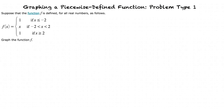We are being asked to graph a piecewise function defined as: f of x is equal to 1 if x is less than or equal to negative 2; f of x is equal to x if x is greater than negative 2 but less than 2; and f of x is equal to 1 if x is greater than or equal to 2.